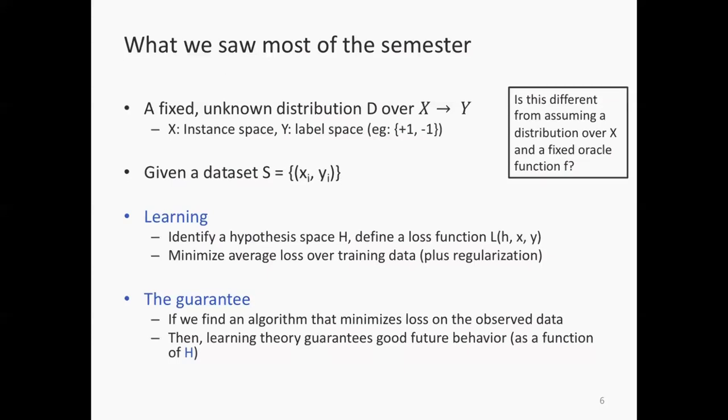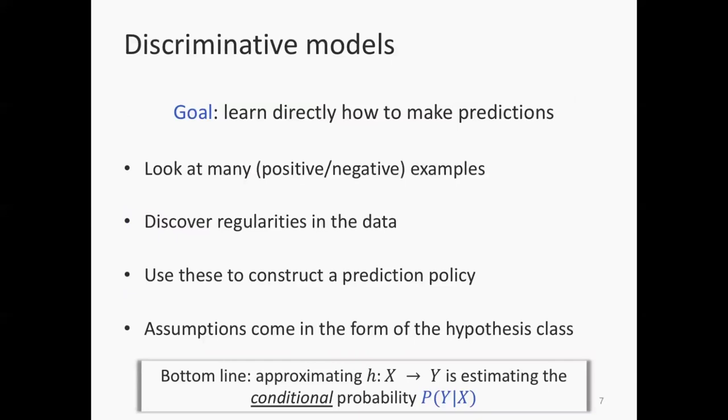These classes of models that we've trained are actually called discriminative models. These are models that learn how to make predictions. You look at many positive and negative examples, discover regularities in the prediction process, and try to construct a policy or function that can make predictions. One way or another, we are estimating the conditional probability P(Y|X). Given the input x, what is the distribution over the labels for a new example? All the models that we saw are doing this.